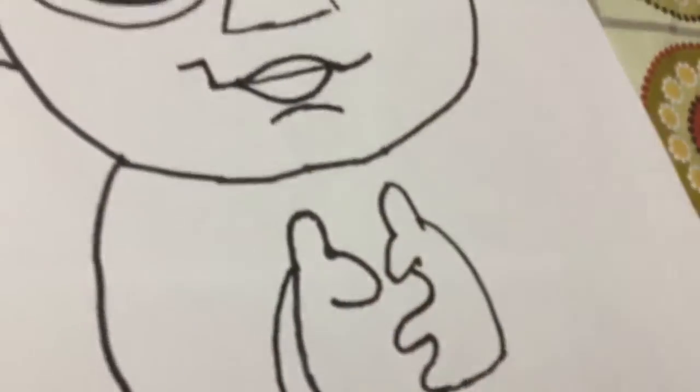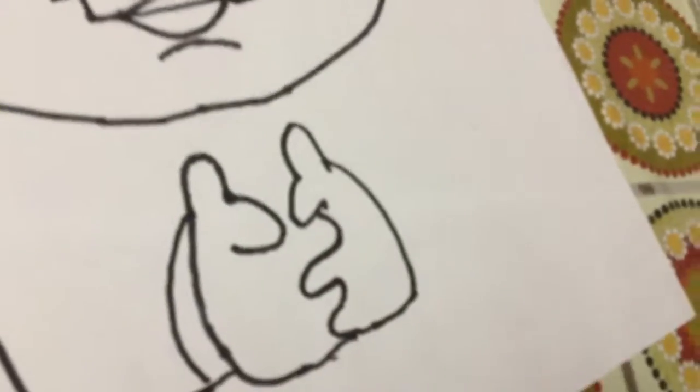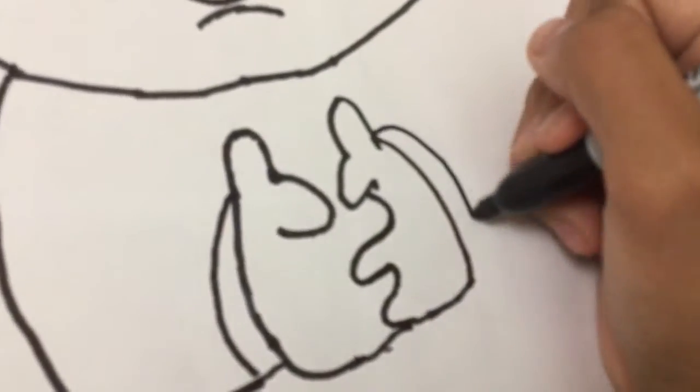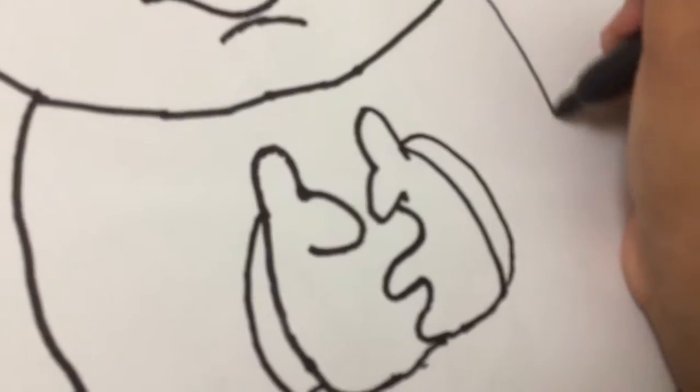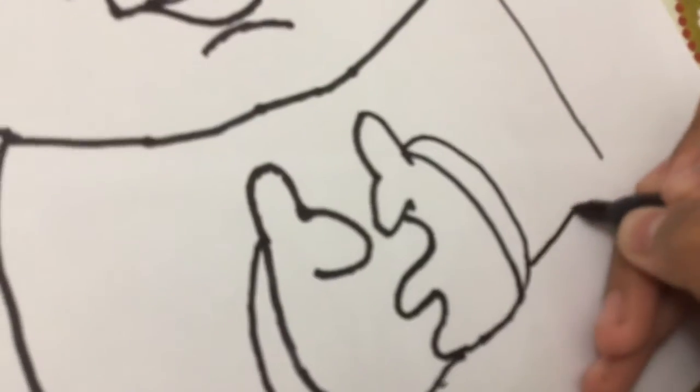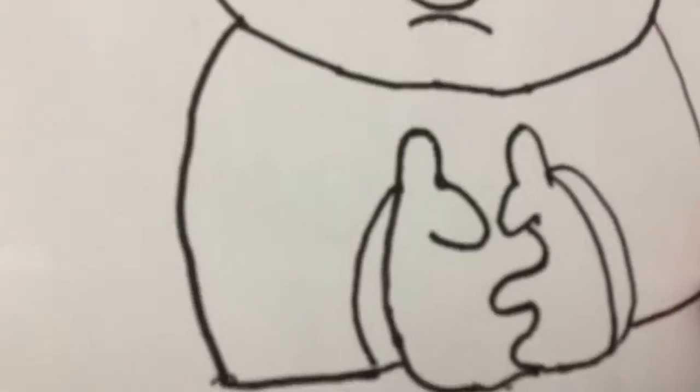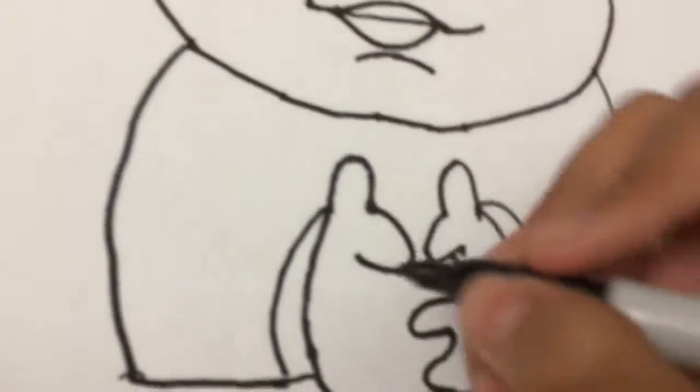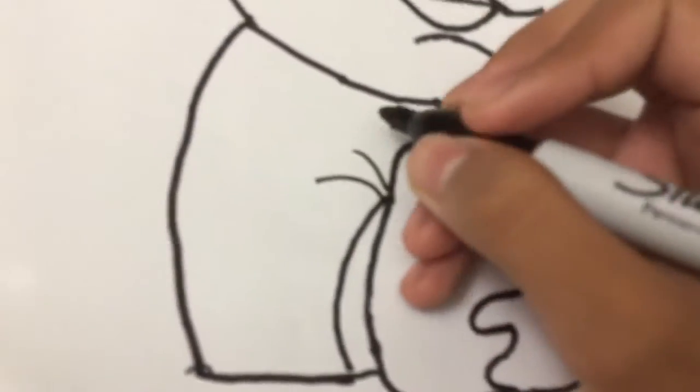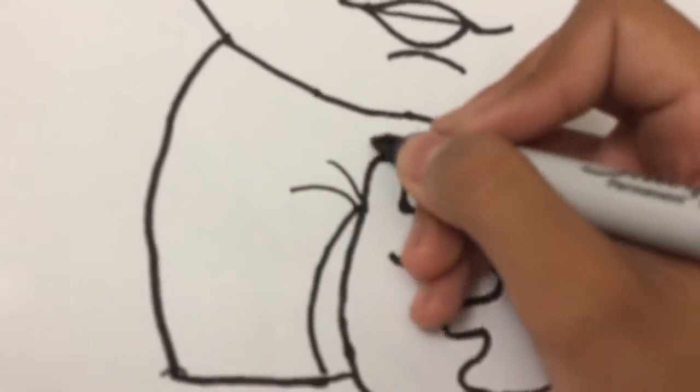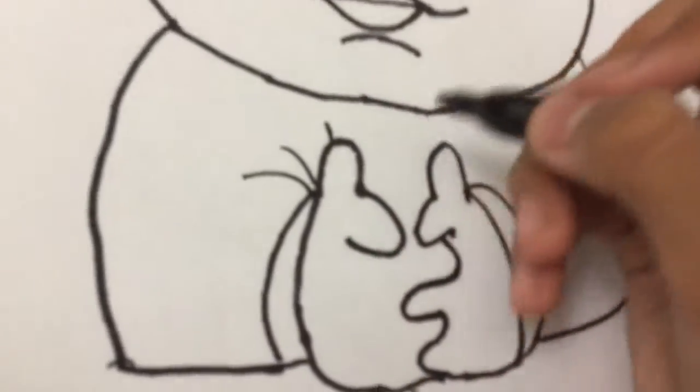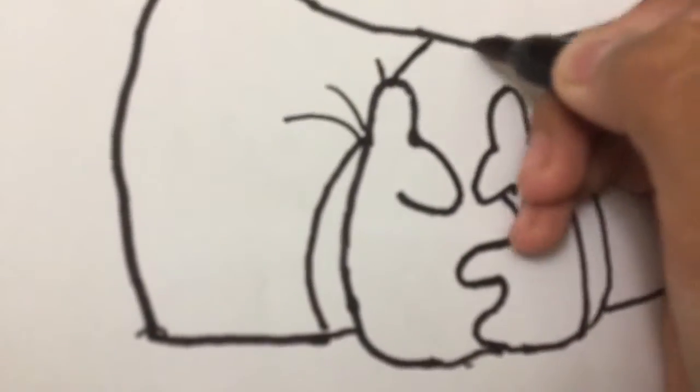And draw a line right here for his shirt - you can see the shirt part. Do the same on the other side like this, and some lines to show that. And then his tie.